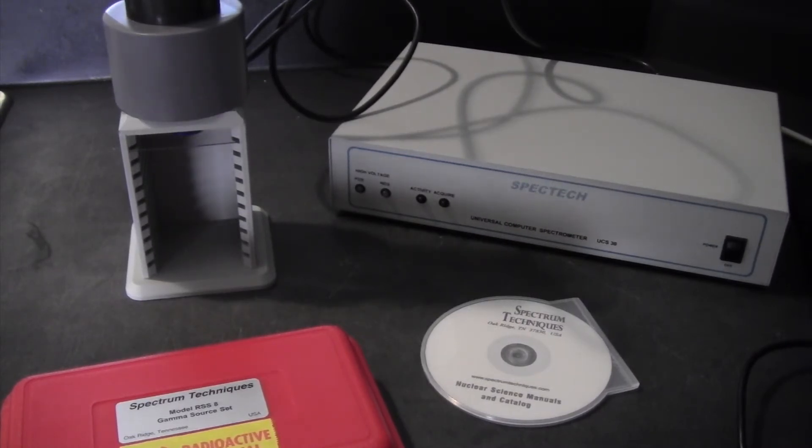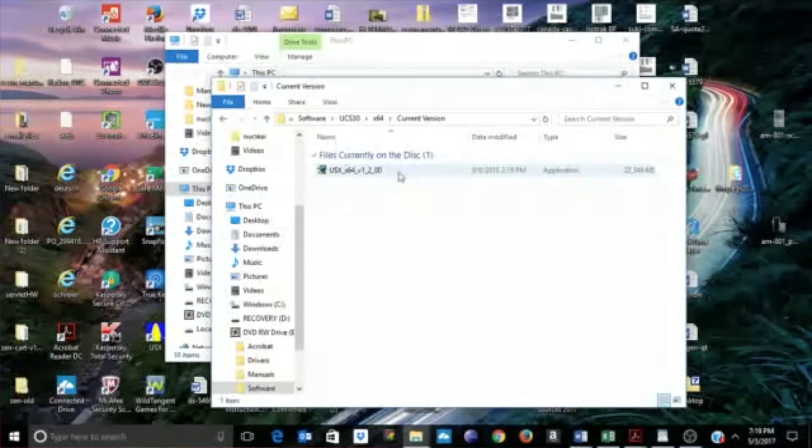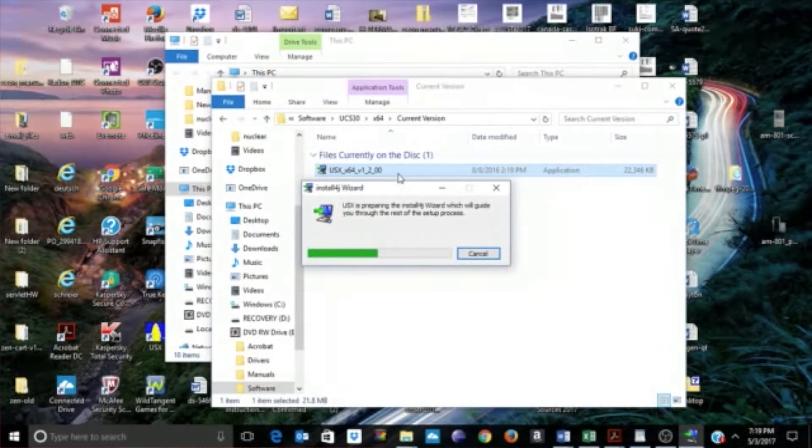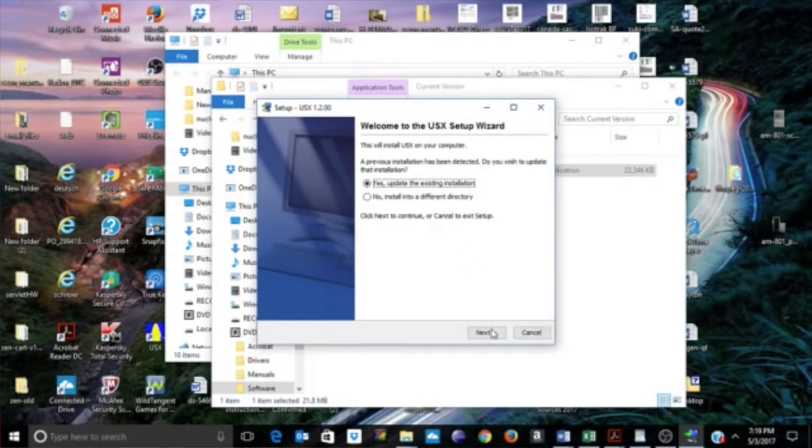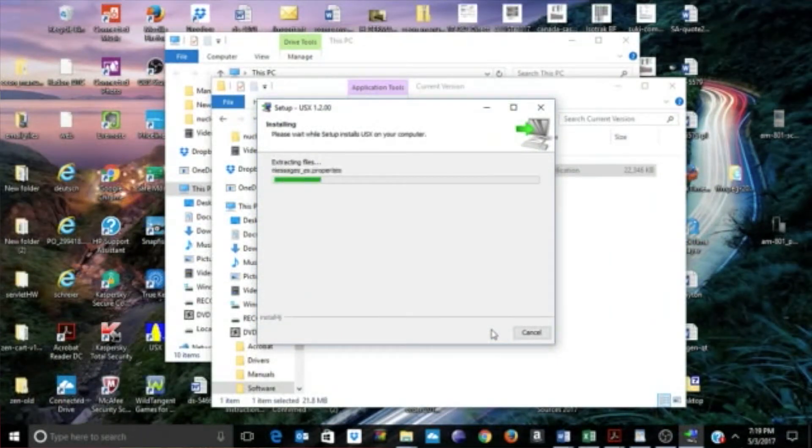We connect the UCS30 unit to a PC which would be running the software. The software is a one-step installation. Simply run the installation file, and you want to install that before connecting the PC to the UCS30.